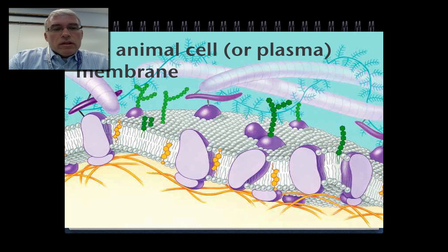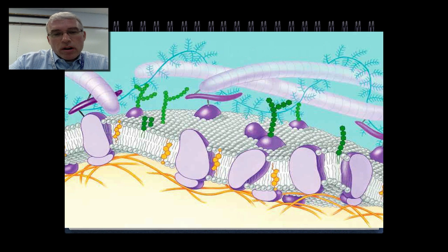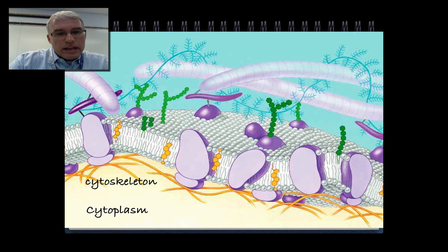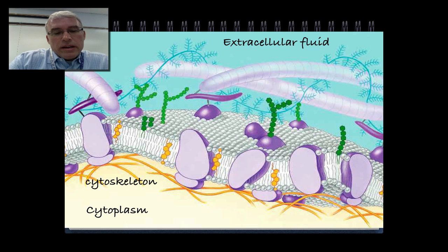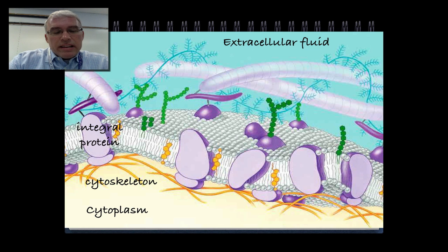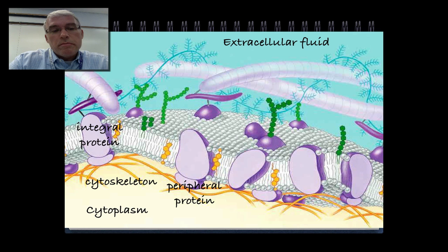Now we'll look in more detail at an animal cell plasma membrane, which has many parts visible in this diagram. Down towards the bottom is the cytoplasm; up towards the top is the extracellular fluid — the liquid surrounding animal cells. Attached to the cytoplasm side of the cell membrane are cytoskeleton elements, which could be microtubules, microfilaments, or intermediate filaments. Embedded in the phospholipid bilayer are integral proteins — integrated directly into the bilayer, also referred to as embedded proteins.